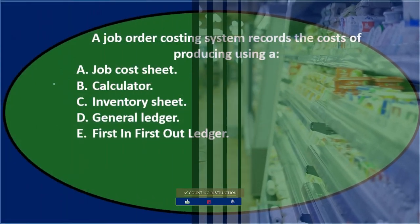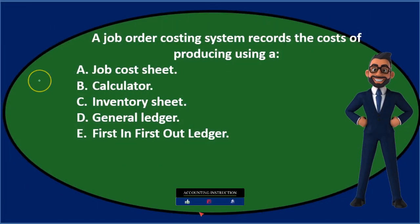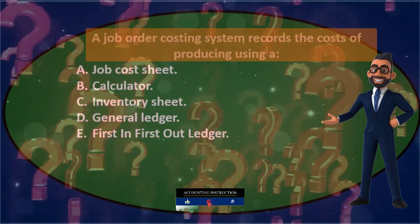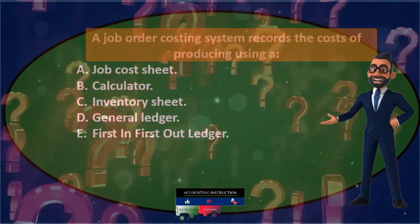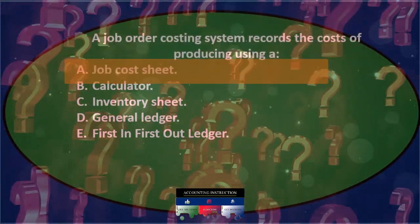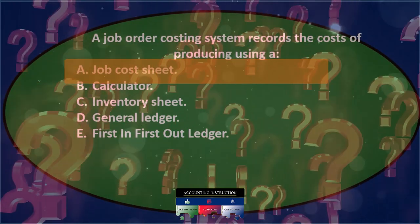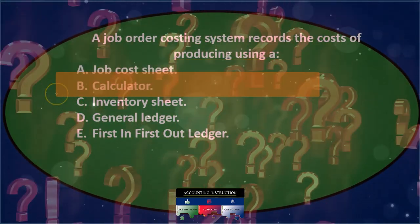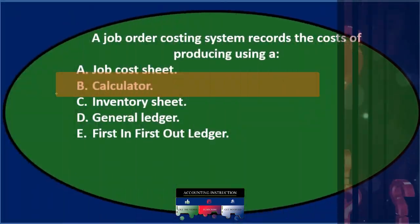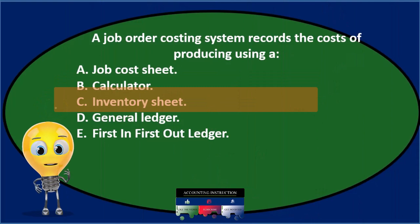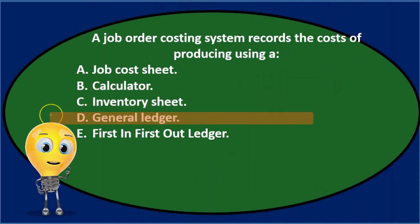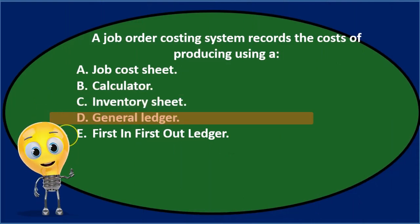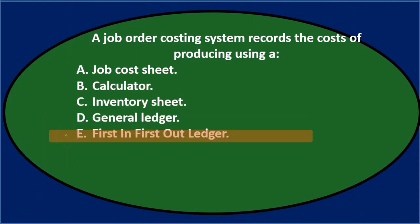Next question. A job order costing system records the cost of producing using: A, a job cost sheet; B, a calculator; C, inventory sheet; D, general ledger; E, first-in first-out ledger.